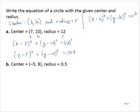Similarly, the -5 is h, the 8 is k, and the radius is r. So I would have (x - (-5))² + (y - 8)² = (0.5)².